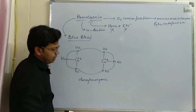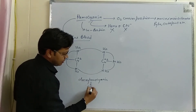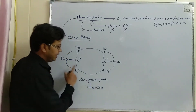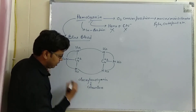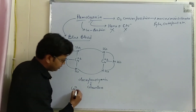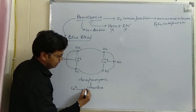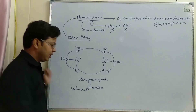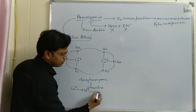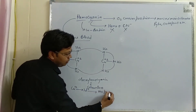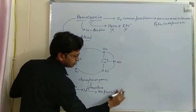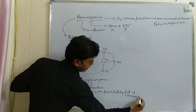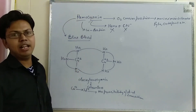The deoxyhemocyanin is colorless. Why is it colorless? Because it contains Cu+1 ion in which the configuration of the metal is 3d10. Due to the 3d10 configuration, it has no possibility of d-d transition, and that is why it is colorless.